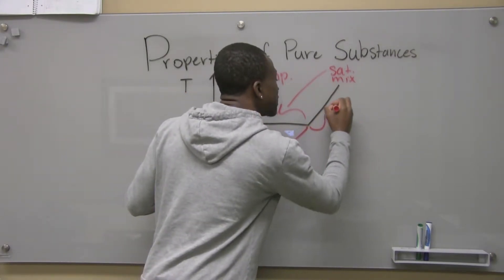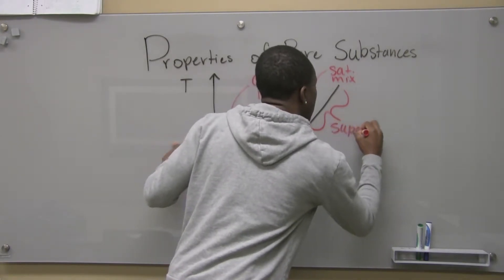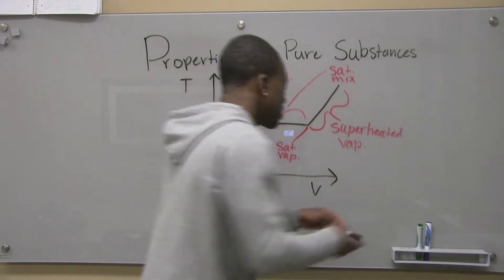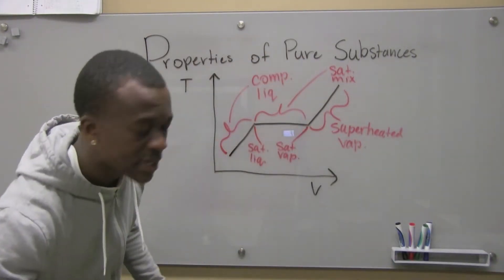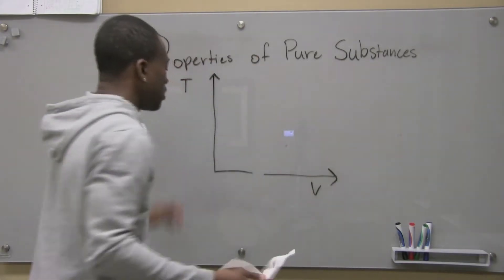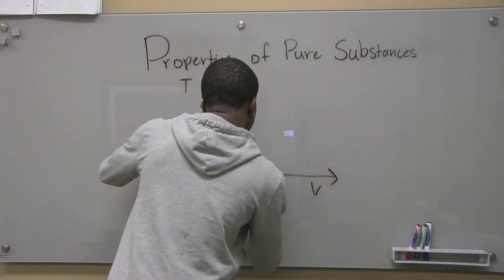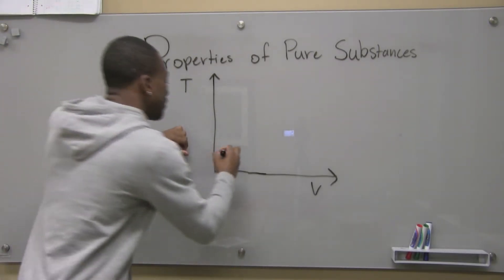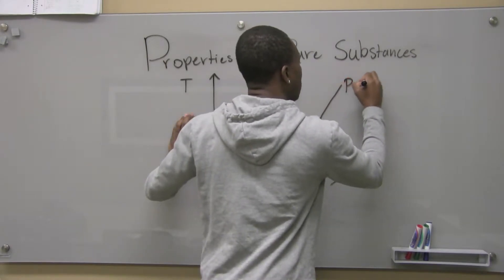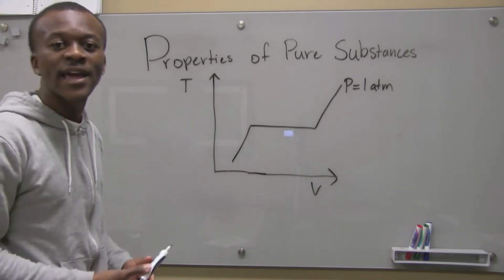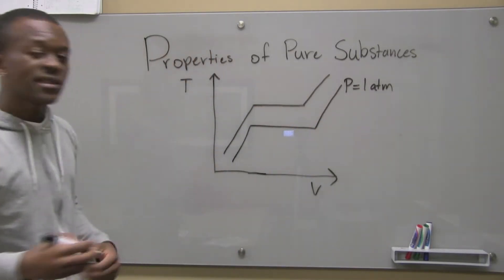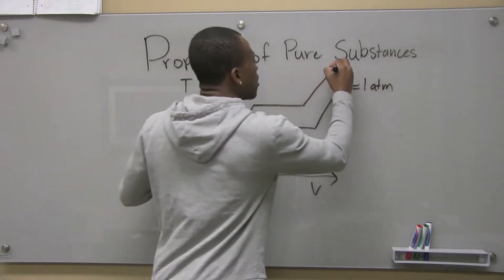Keep this graph in mind — this is a constant pressure line. Let's say I choose different pressures to analyze water at. Drawing the same constant pressure line, let's say I chose P to be one atmosphere. Then let's say I choose a slightly higher P — say, two atmospheres, or just higher than one.